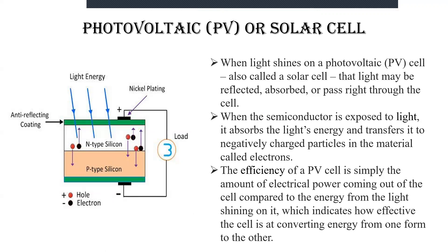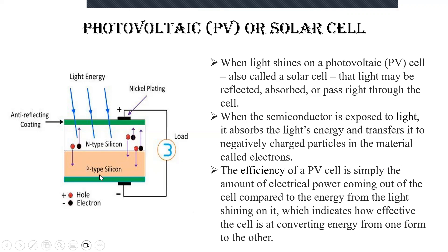There are several different kinds of semiconductor materials used in PV cells. Here we are using silicon. When the semiconductor material is exposed to light, it absorbs the light energy and transfers all the negatively charged particles — that is, electrons — where the extra energy allows the electrons to flow through the material. This is where the fusion of electrons and holes takes place.